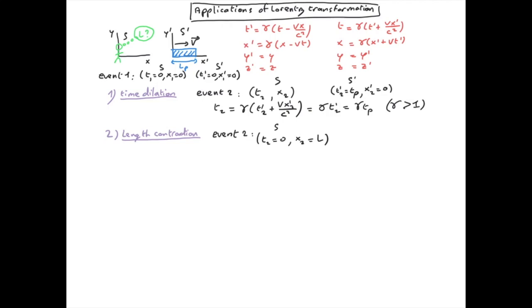If we write event 2 in the S′ frame, we have a time T₂′ which we don't care about. What we want is the position X₂′, which is just the edge of the object on the X′ axis at position Lₚ.